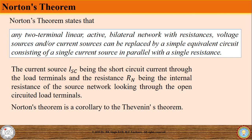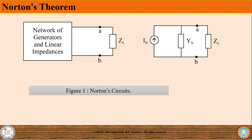Norton's theorem states that any two-terminal linear active bilateral network with resistances, voltage sources, and/or current sources can be replaced by a simple equivalent circuit consisting of a single current source in parallel with a single resistance. So a given network of generators and linear impedances connected with a load ZL can be replaced by an equivalent Norton circuit having a Norton current source in parallel with a Norton impedance.